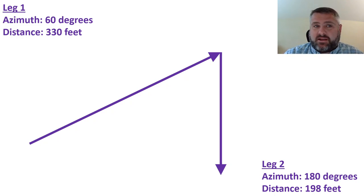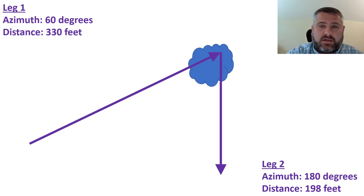Here let's say we have the same first leg azimuth of 60 degrees and a distance of 330 feet. Once they complete that they're supposed to turn due south 180 degrees and go another 198 feet. But as the person's traversing this course they notice that there's a ravine or some sort of obstacle at the corner that they really don't want to go through. What you can do is you can cut the corner.